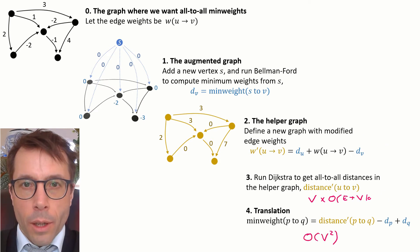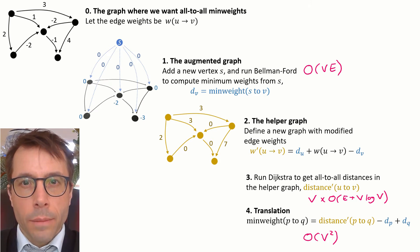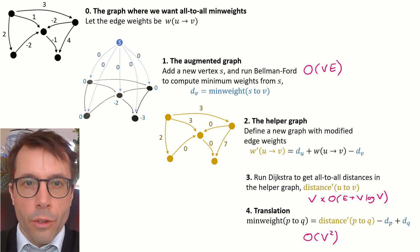Next remark: let's have a look at the running time of each of these steps. Step one, running Bellman-Ford on the augmented graph, takes time big O of V times E. The Dijkstra step takes time V times big O of E plus V log V. And the final translation step takes time big O of V squared to go through all pairs of vertices.